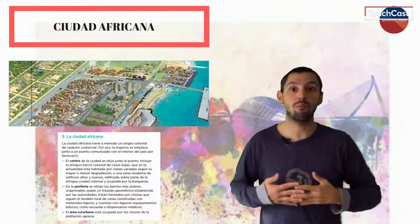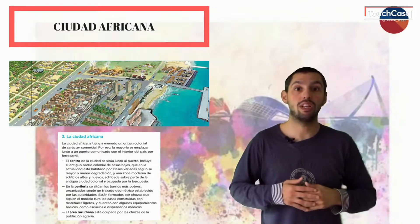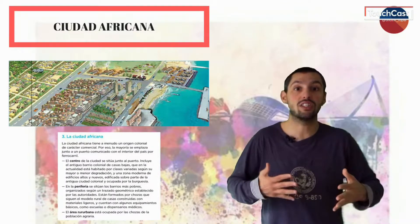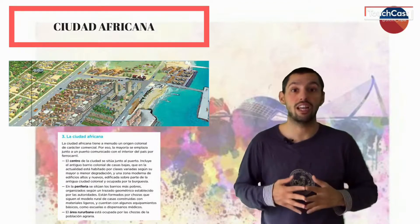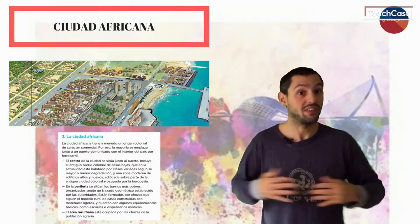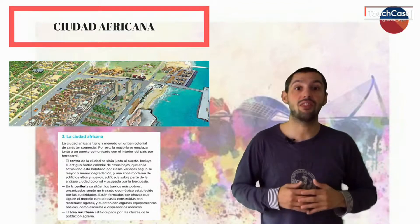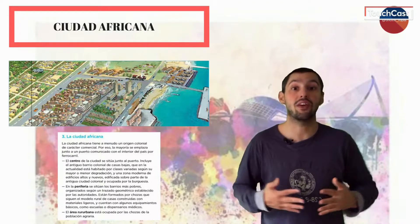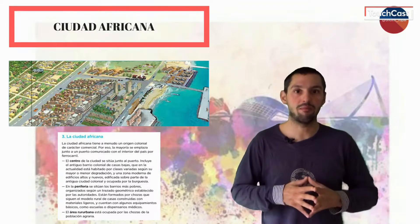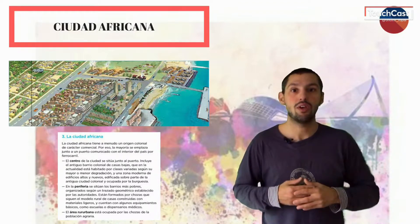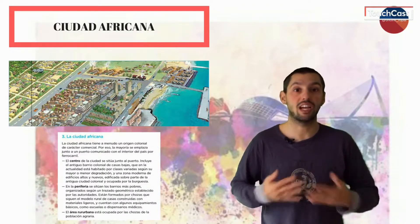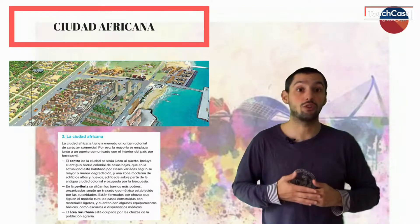Finalmente, concluimos con el tercer y último plano ciudadano, el de la ciudad africana, muy peculiar por aunar un pasado imperial con su carácter puramente comercial y financiero. En este caso, el centro se sitúa junto al puerto, lugar que se rodea de un barrio colonial habitado por todo tipo de clases sociales y con una degradación mayor o menor según la ocupación de dichas clases. En la periferia también se hallan los barrios más pobres bajo parámetros de una organización férrea estatal y en forma de cuadrícula geométrica habitualmente. Cuenta también con algunos servicios como escuelas o centros médicos con escasos medios. Por último, el área rural urbana es habitada por trabajadores agrícolas en chozas con un modo de vida totalmente agrario.